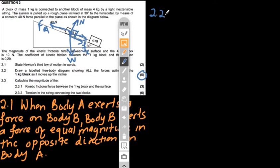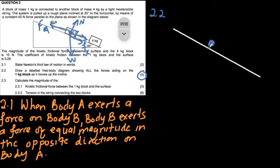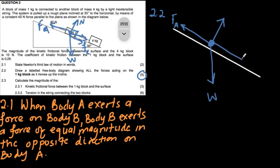Now I transfer my diagram to my answer script for question 2.2. Representing the block as a dot, I draw the slope as a guideline, then the normal force perpendicular to the surface, weight vertically downwards, applied force FA parallel to the plane of motion, tension parallel to the plane, and kinetic friction also parallel to the plane. Very important: always label your diagram — no label means no marks.